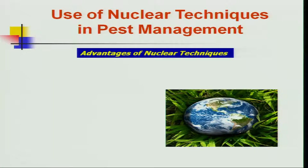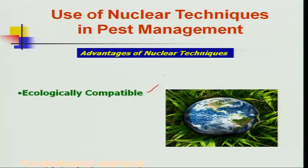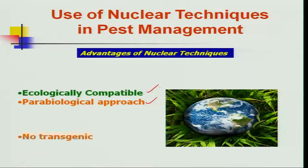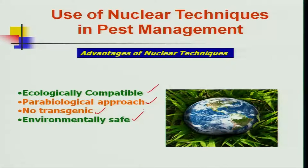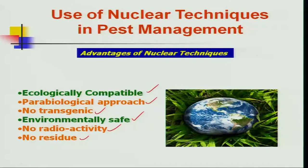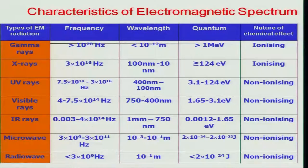The use of nuclear techniques in pest management is highly advantageous because it is ecologically most compatible, it is a para-biological approach, and it is non-transgenic. Anything transgenic is not accepted by the farming community or policy makers, hence this is a non-transgenic and environmentally most safe technique. There is no radioactivity left in the ecosystem and therefore no residue left, which is why nuclear techniques find a better place in IPM.